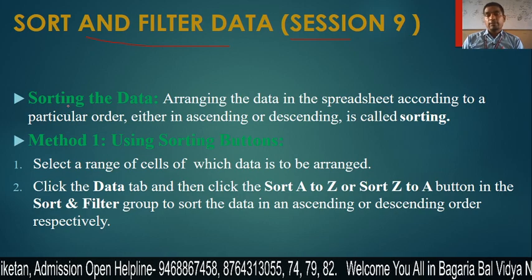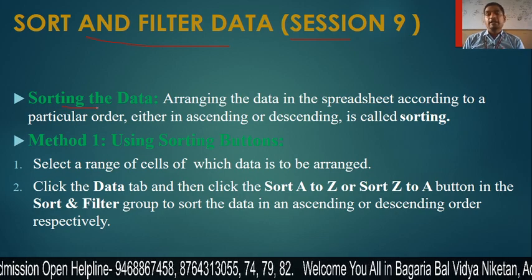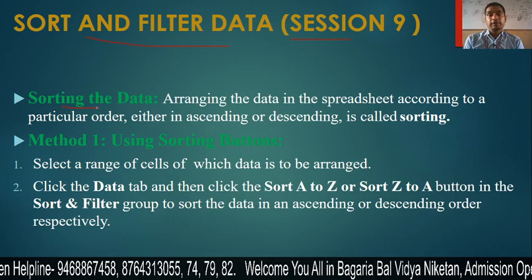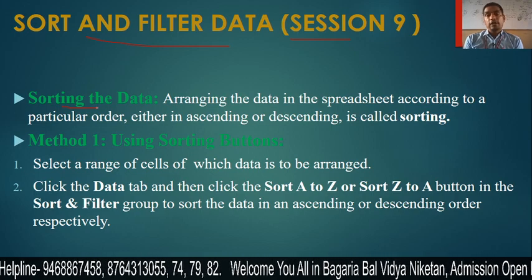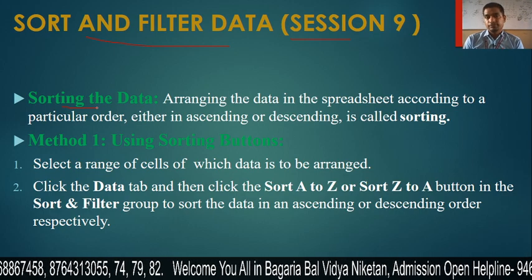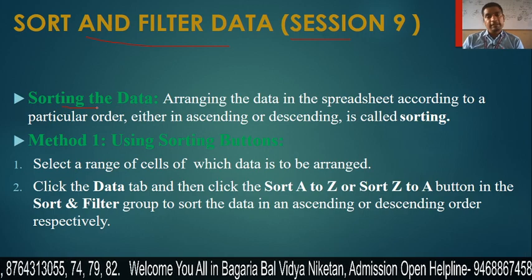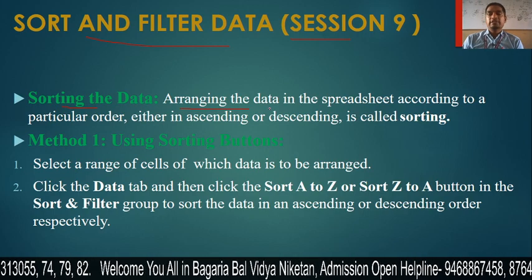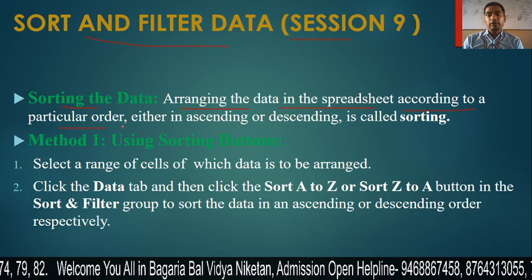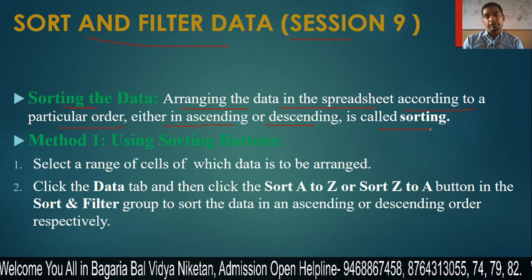What is sorting? Sorting means arranging the data in ascending or descending order. Arranging the data in a spreadsheet according to a particular order, either in ascending or descending order, is called sorting.